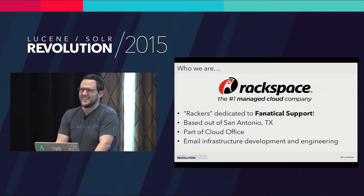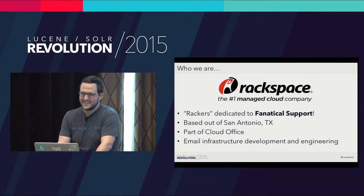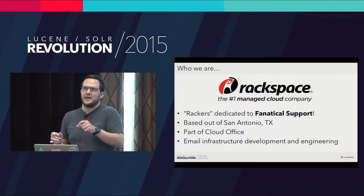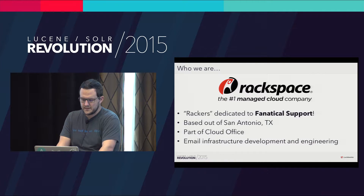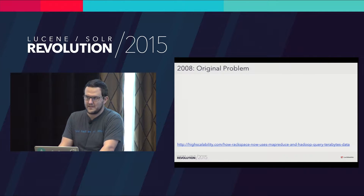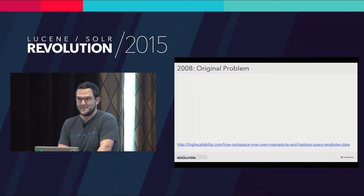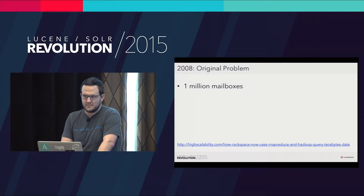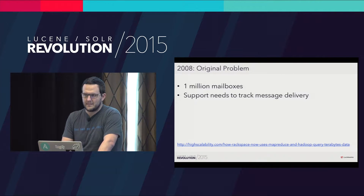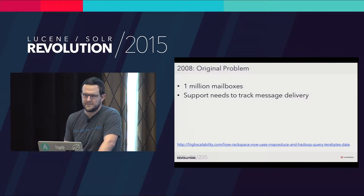We're going to talk about our tool today that we've had in some iteration for about seven years. It's for searching for email and authentication transactions, and our support team uses this tool to track things down for customers. Going back to 2008 — this actually got mentioned in the keynote this morning; Matt File was one of the guys who helped build it back in the day. We were at about a million mailboxes in 2008, and our support team needed to track messages for users so they could confirm delivery and give customers more information about what happened to a message or an authentication.